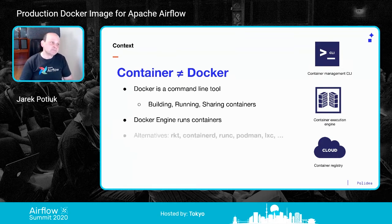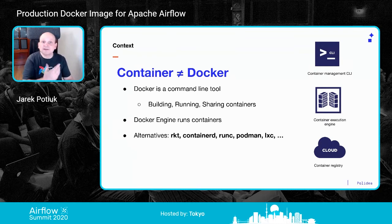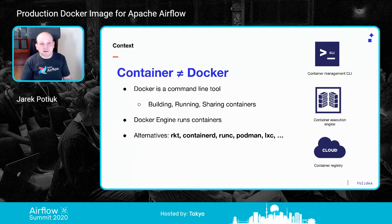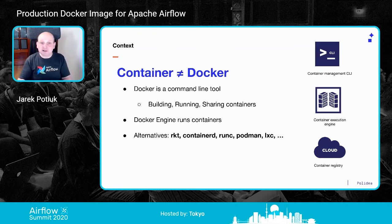Docker is a command-line tool that does all of that — building, running, and sharing containers. Docker Engine is the engine to run containers. When you install Docker, you install both CLI and engine. But there are many alternatives: rkt, containerd, runC, Podman, LXC. Some target the whole ecosystem, some do just one thing — for example, containerd is just a container execution engine, Podman is for building images. They are fully interchangeable.